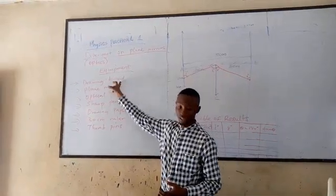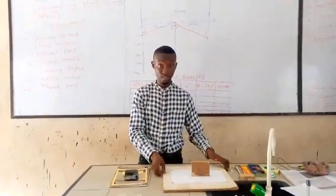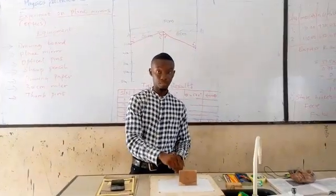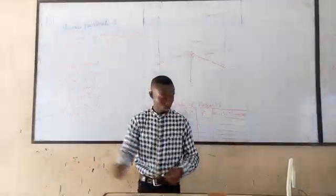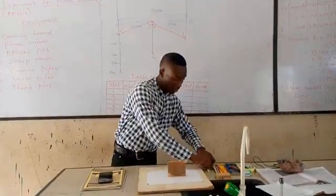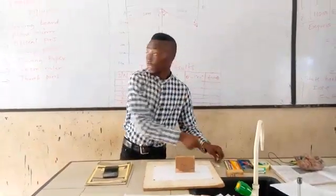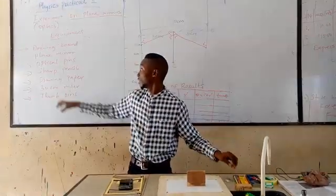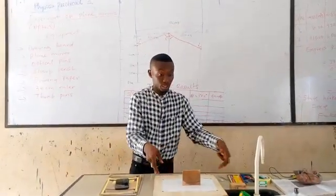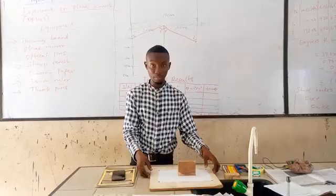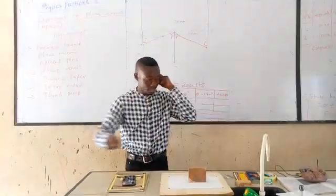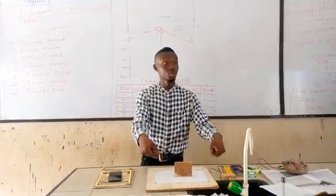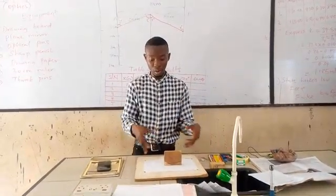We are going to see the experimental equipment that will be used to conduct this practical. First we have a drawing board, then we have a plane mirror. Then we have optical pins, a sharp pencil, a drawing paper fixed on the drawing board, a 30 cm ruler, and tape used to fix the paper on the board.